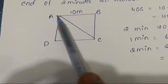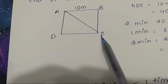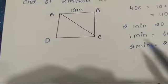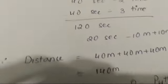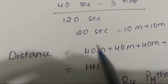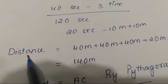Now after 120 seconds, 20 seconds are remaining. So in 20 seconds, where will he reach? See, in 10 seconds from here to here, and in 10 seconds from here to here. So in 20 seconds, 20 meters will be traveled. So total distance traveled is...